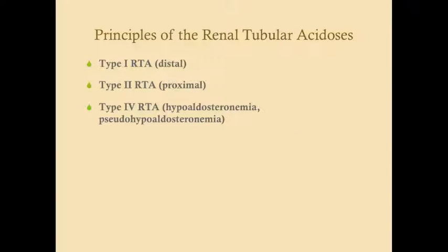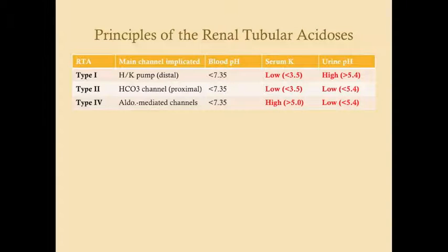There are three types of renal tubular acidosis. Type 1 affects a distal channel, type 2 affects a proximal channel, and type 4 affects the channels regulated by aldosterone. We distinguish between them using serum potassium and urinary pH, and all three have different profiles.